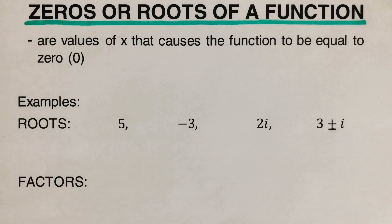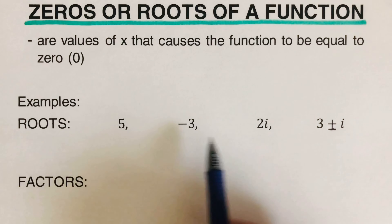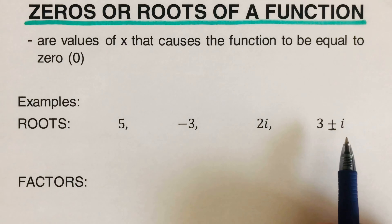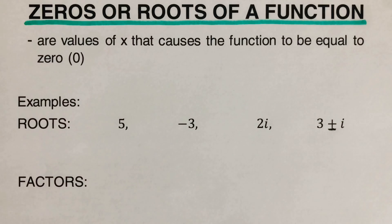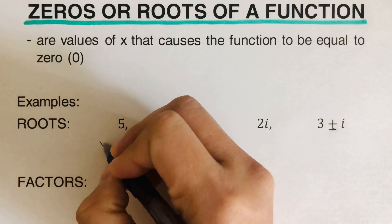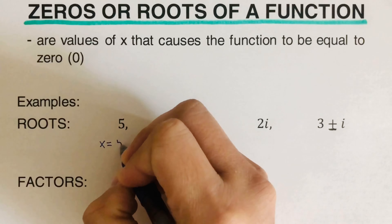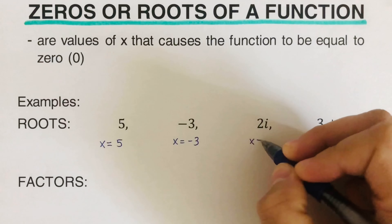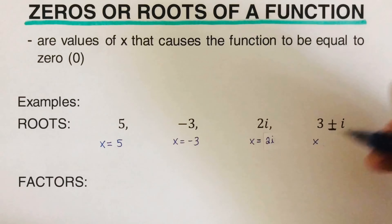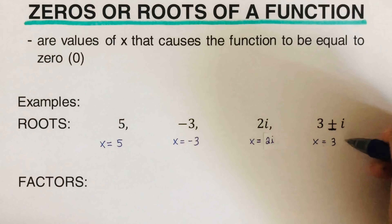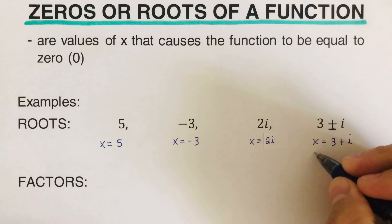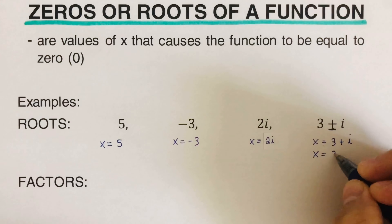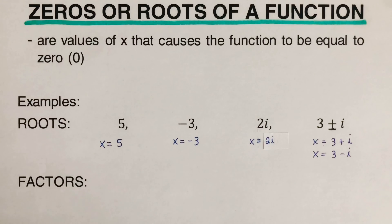There are some notations for how roots are written in problems. In some problems they write the roots as: 5, -3, 2i, 3±i. In other problems they write it differently: x = 5, x = -3, x = 2i, x = 3+i, and since it's plus and minus, also x = 3-i.